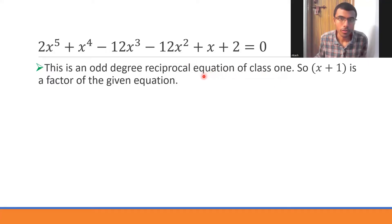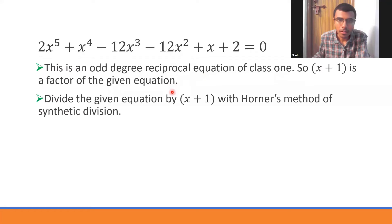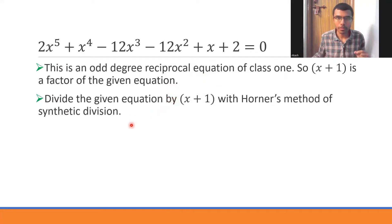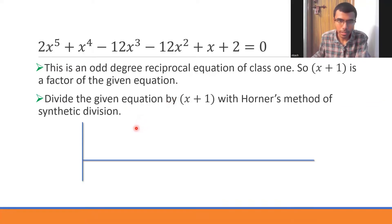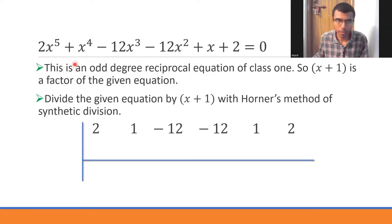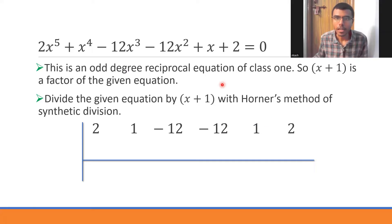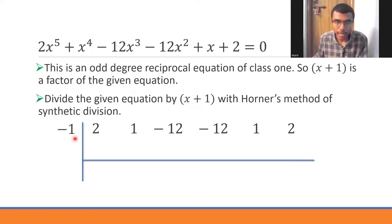Dividing by x+1 will give us the coefficients of a 4th-degree polynomial. I'm going to use Horner's method of synthetic division. Even if you're new to Horner's method, stay with me — you'll follow along. First, write down all the coefficients of the given polynomial: 2, 1, -12, -12, 1, 2. Since we're dividing by x+1, we write -1 here.